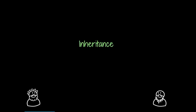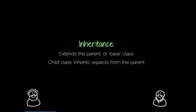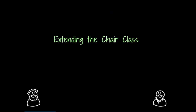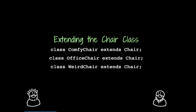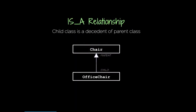We have a concept in object-oriented programming called inheritance — it extends the parent or base class, and the child class is said to inherit certain aspects from the parent. When we have that Chair class, we have 'class ComfyChair extends Chair,' 'class OfficeChair extends Chair,' 'class WeirdChair — yes, it still looks like a bizarre hand — but it extends Chair.' This is what we call an is-a relationship: an office chair is a chair. When we draw this, we draw each class as a box with a name, and we draw the arrow in the direction that we read the sentence — so it goes up the chain rather than down.